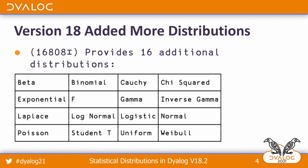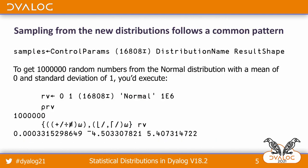Version 18 added 16 additional distributions. This led to the question of: did we actually get these distributions right, or is there a problem in our code?